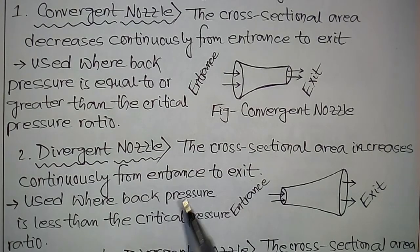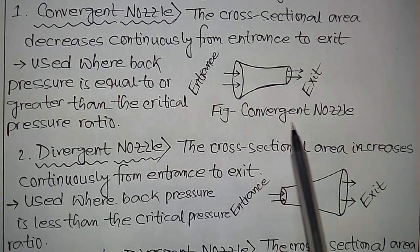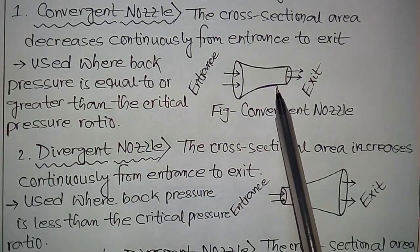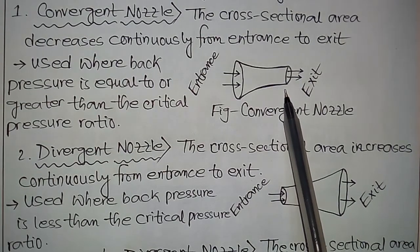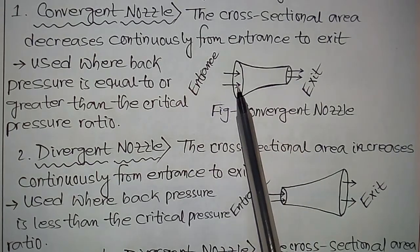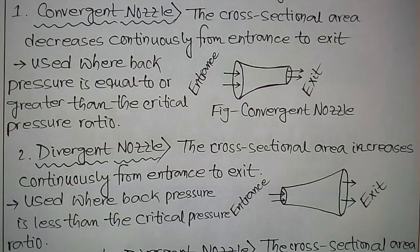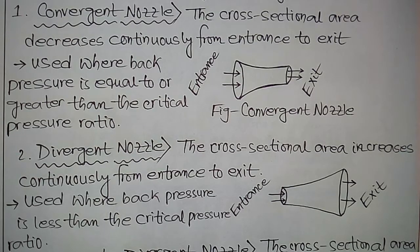First, the convergent nozzle. The cross-sectional area decreases continuously from entrance to exit. Here I draw a diagram for the convergent nozzle. It is used where back pressure is equal to or greater than the critical pressure ratio. It is generally used in power development in the case of impulse turbines.